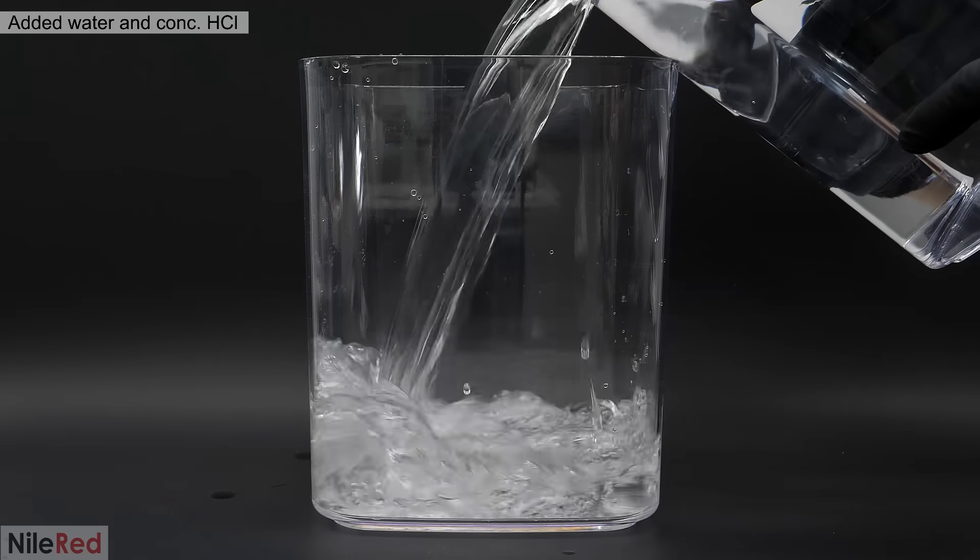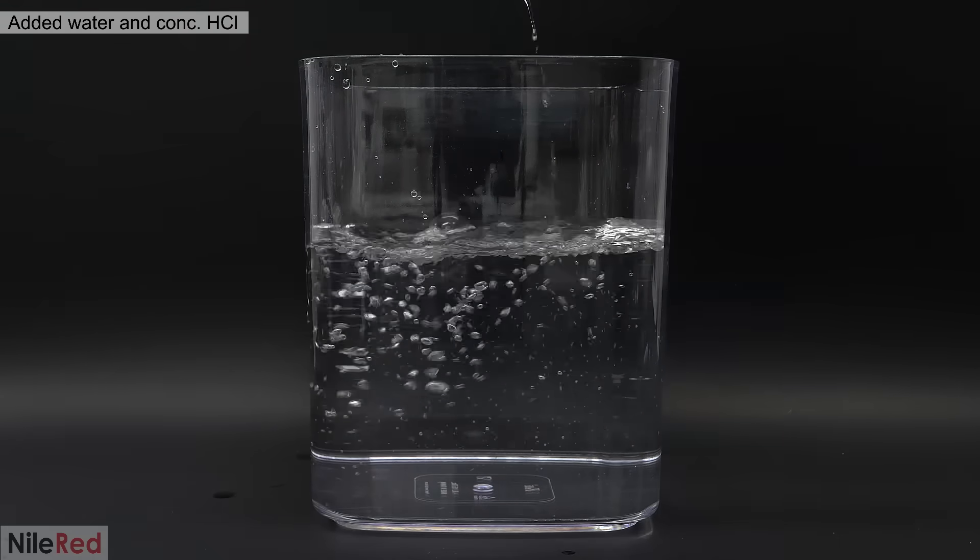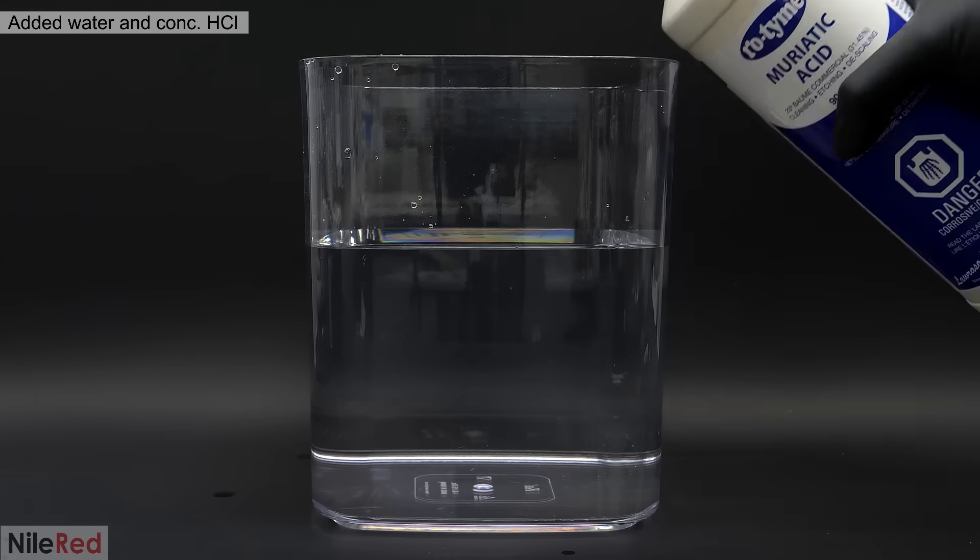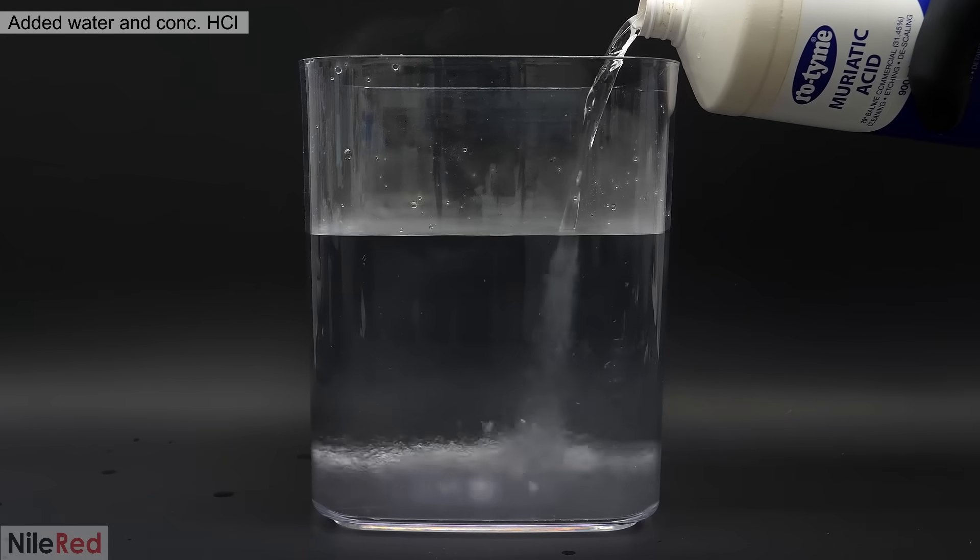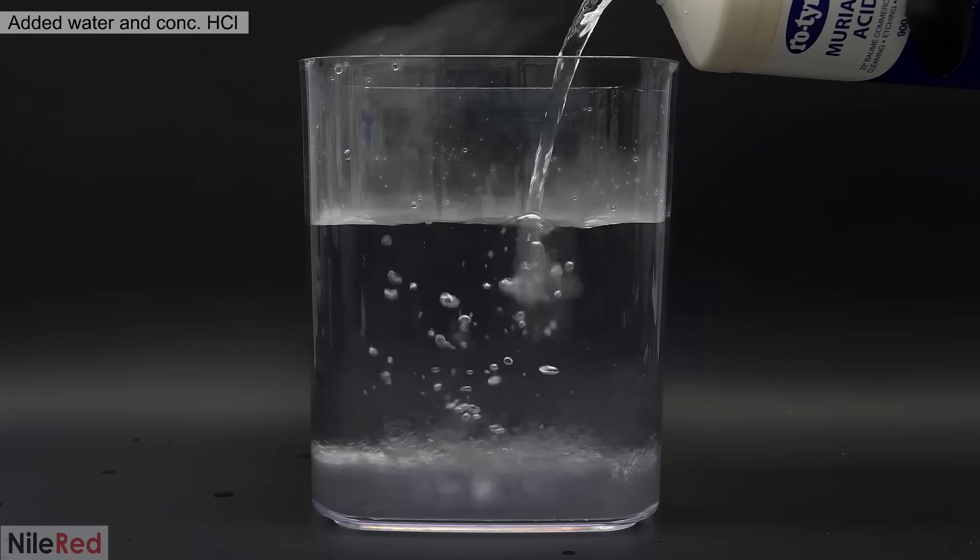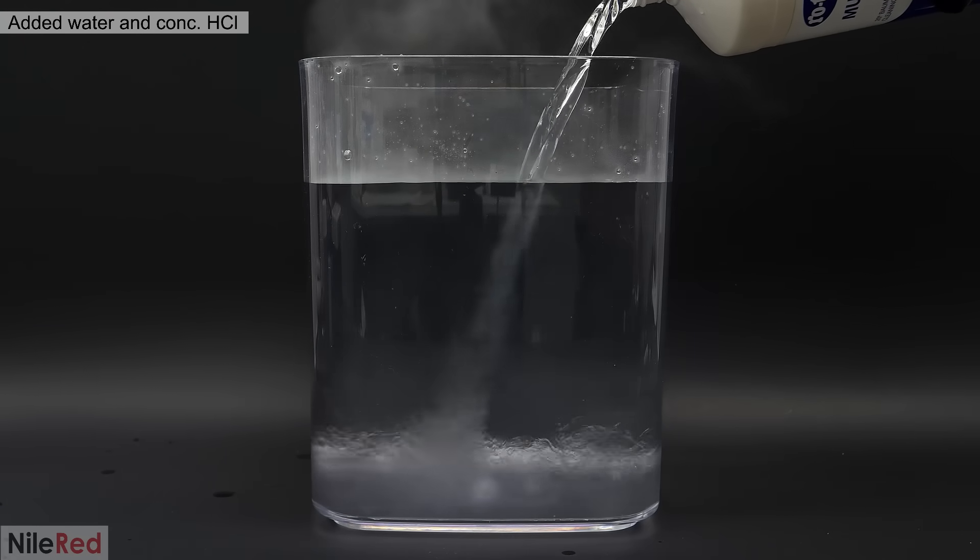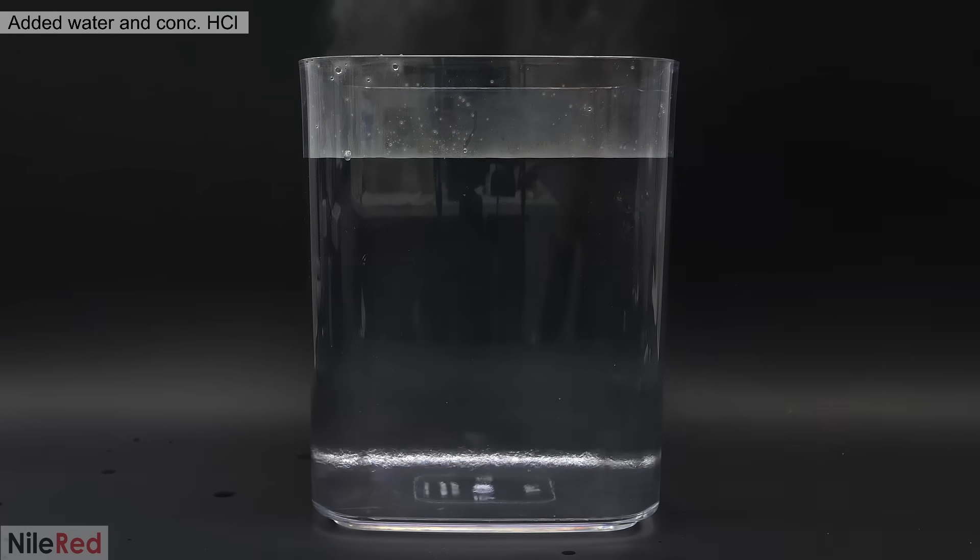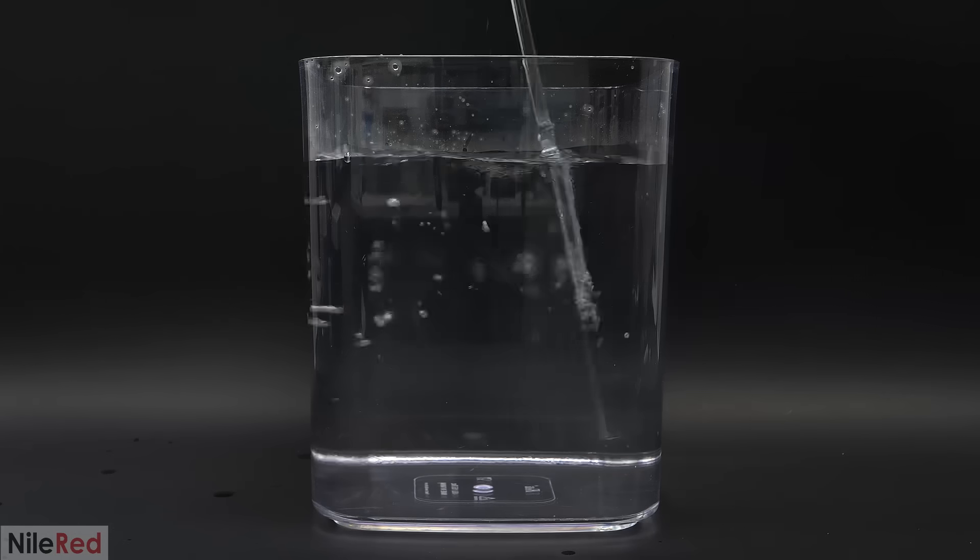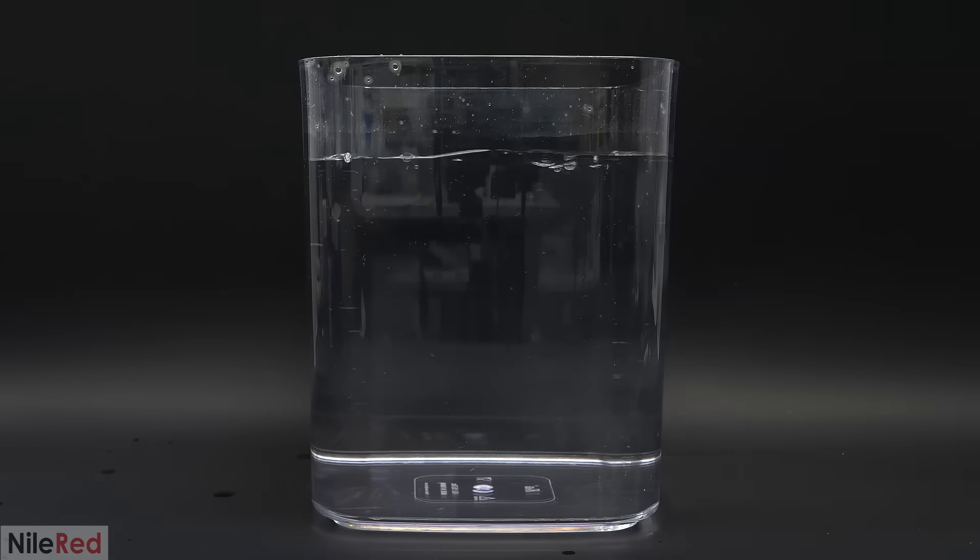The next step was to make a dilute solution of hydrochloric acid, and to do this, I added 3 liters of water to a large container, followed by a liter of the concentrated acid. I did this slowly and as carefully as possible to minimize splashing, but of course, some still did happen. This is why when working with acids, it's really important to wear proper safety gear, especially things like goggles. But anyway, after it was added, I stirred it around until it looked like it was all mixed together evenly.